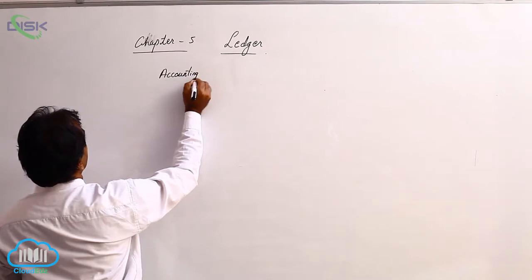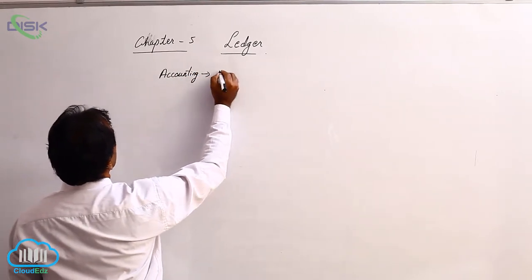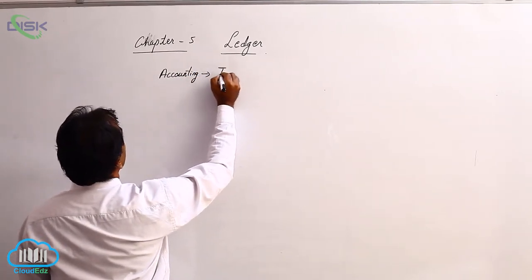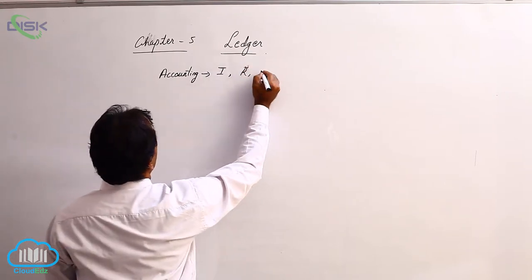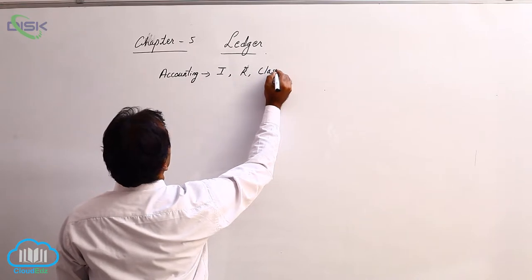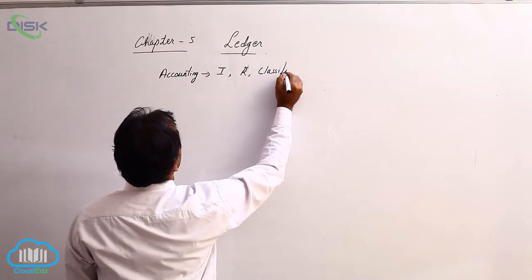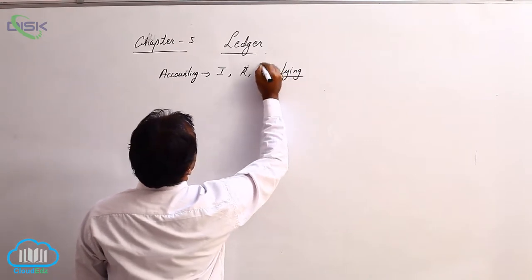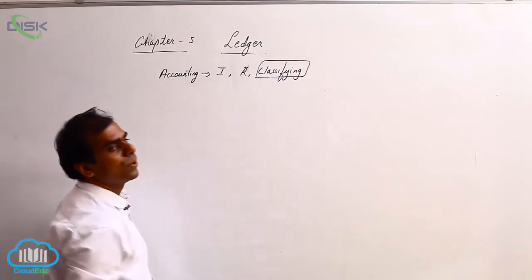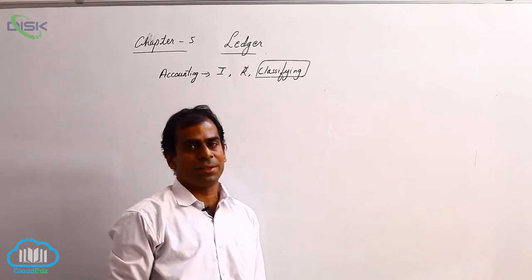In accounting you said there is the word as identifying, recording, and you have also seen there is a word classifying. Now this word classifying is what we are doing in this chapter called Ledger.